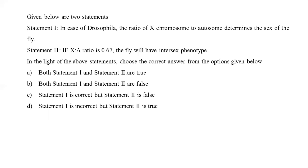Given below are two statements. Statement 1: in Drosophila, the ratio of X chromosome to autosomes determines the sex of the fly. Statement 2: if the X-to-A ratio is 0.67, the fly will have an intersex phenotype.